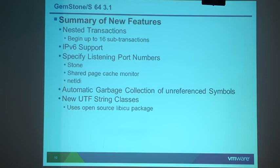Before nested transactions, it was all or nothing — when you aborted, you rolled back everything you changed. Now you can divide it up into 16 different subtransactions. IPv6 support is also added in 3.1, alongside IPv4, with some mixing and matching on networks. You can also now specify the port numbers that GemStone server processes listen on, which is important for some of our cloud customers who are restricted to a specific port range.